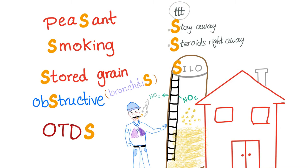The S. Related to smoking. Also, smoking makes it worse. If the farmer smokes, higher risk of silo fillers disease. Exposure to stored grain.